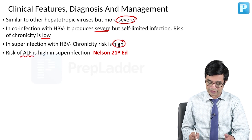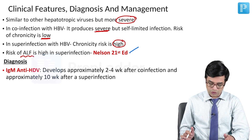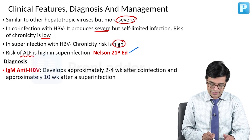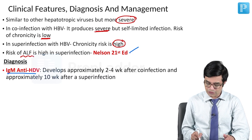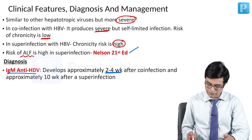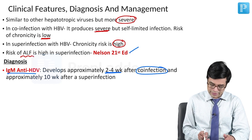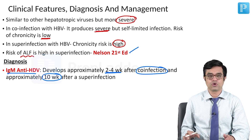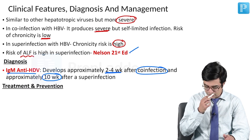This is a line directly taken from Nelson. For diagnosis, you will do IgM anti-HDV. It will develop approximately 2 to 4 weeks after onset in co-infection, and it will be delayed in super-infection, where it takes approximately 10 weeks to develop.